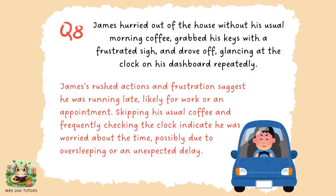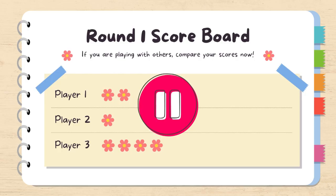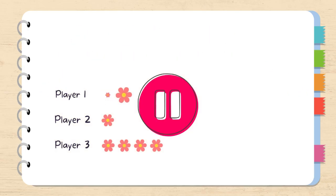Question eight. Let's read the text again: 'James hurried out of the house without his usual morning coffee, grabbed his keys with a frustrated sigh and drove off, glancing at the clock on his dashboard repeatedly.' A modelled answer: James's rushed actions and frustration suggest he was running late, likely for work or an appointment. Skipping his usual coffee and frequently checking the clock indicate he was worried about the time, possibly due to oversleeping or an unexpected delay. Make a statement answering the question, include evidence, then explain your reasoning. Now add up your scores and compare them for round one — then we move on to round two.